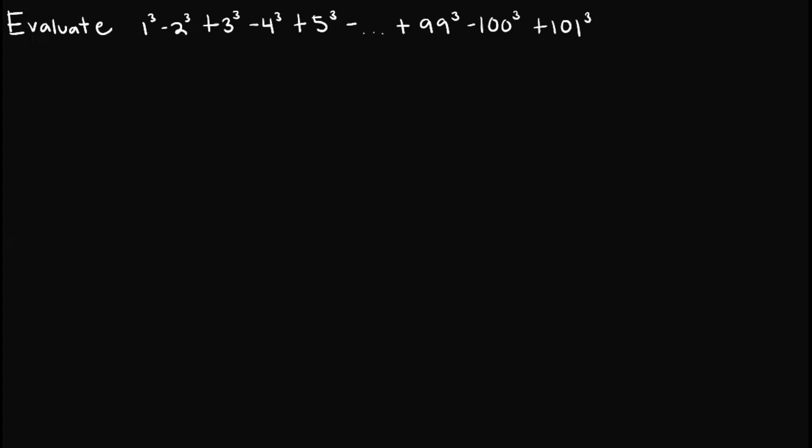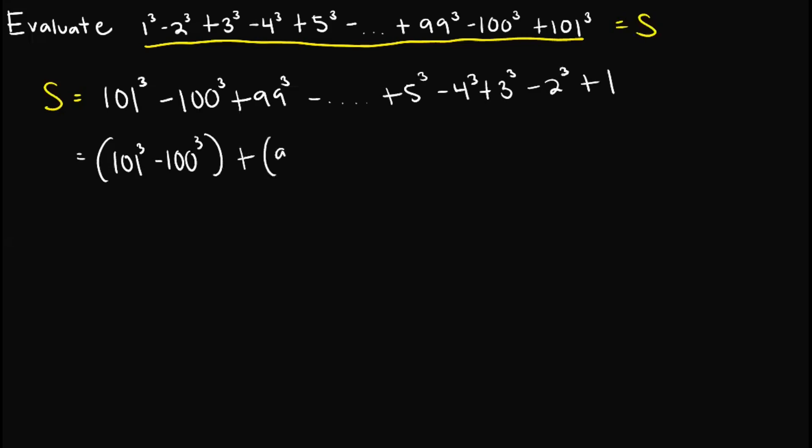And now let us try solving the given problem. So let's first let this one be equal to S. So S is equal to some rearrangement of the terms which gives us 101³ - 100³ + 99³ and so on plus 5³ - 4³ + 3³ - 2³ plus 1.